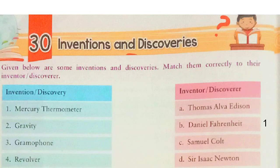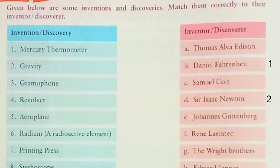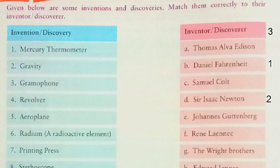Number 2: Gravity — the discoverer was Newton, given in option D. Number 3: Gramophone — the inventor was Thomas Alva Edison, option A. Number 4: Revolver — invented by Samuel Colt, option C. Number 5: Aeroplane — invented by the Wright Brothers, option G.